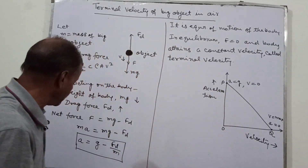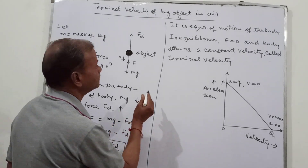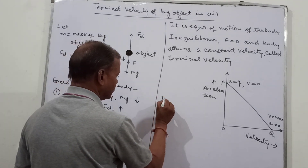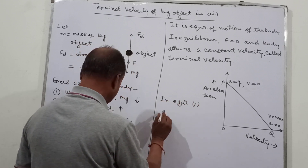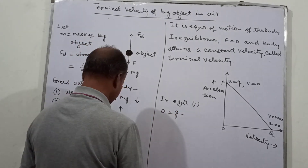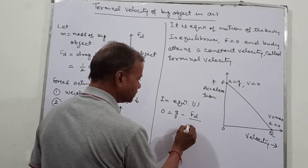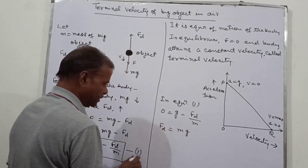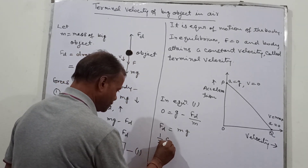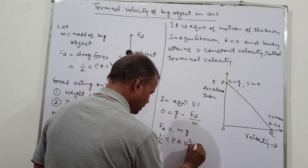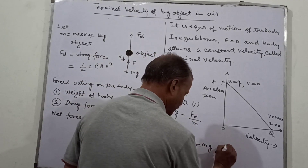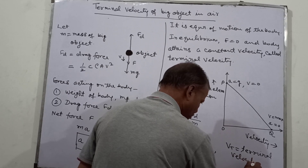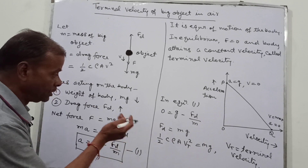This line represents the equation of motion. Setting A equal to zero in equation one: 0 equals G minus Fd upon M, so Fd equals Mg. Substituting, one-half C rho A Vt squared equals Mg, where Vt is the terminal velocity. From this we can derive the expression for terminal velocity: Vt equals the square root of 2Mg divided by C rho A.